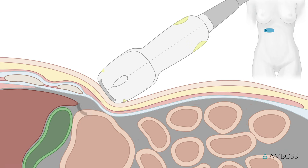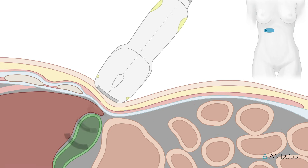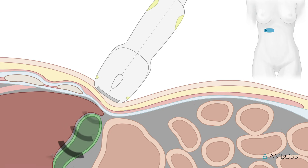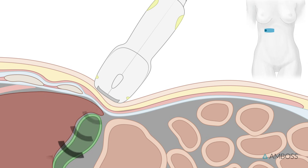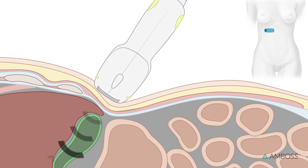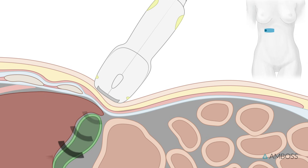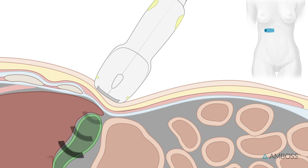The patient should be instructed to inhale deeply. Doing this shifts the liver, and with it the gallbladder, in a caudal direction. This allows us to use the liver as an acoustic window.